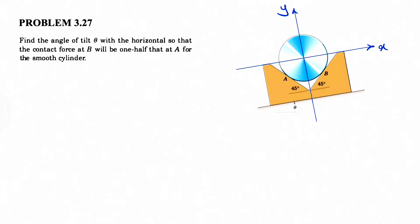We're going to be solving question 27 from the third chapter of Engineering Mechanics by Miriam. This question was requested by one of you. We need to find the angle theta with the horizontal so that the contact force at point B will be one half of the force at point A for the smooth cylinder.